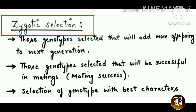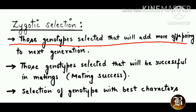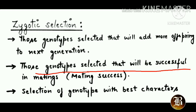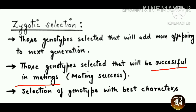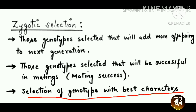Next is zygotic selection. Having covered gene-level and gamete-level selection, we now look at zygotic selection. Those genotypes will be selected that have the capability to add more offspring to the next generation — that means those genotypes who are reproductively successful. Also, genotypes that influence the mating process will result in more matings. More matings means more offspring added, so mating success directly influences reproductive success. Genotypes with good mating or reproductive success will be selected. Overall, the zygote with the best characters will be selected over others.